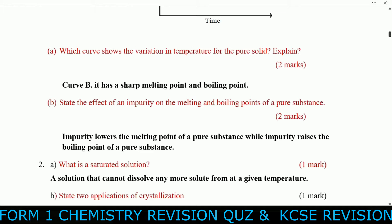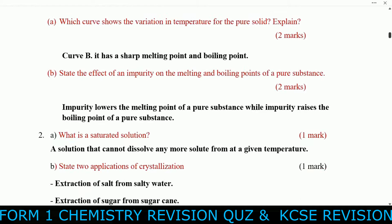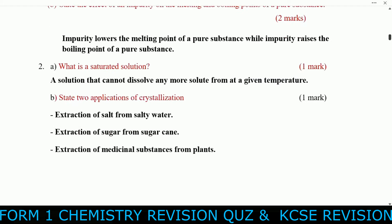Question two: State the effect of an impurity on the melting and boiling point of a pure substance. Impurities lower the melting point of a pure substance, while impurities raise the boiling point of a pure substance. Next: What is a saturated solution? A saturated solution is a solution that cannot dissolve any more solute at a given temperature.